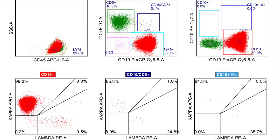This middle panel also shows us that the B-cells are CD5-negative. And on the right-hand side of the top row, you'll see that these CD19-positive B-cells do not co-express CD10. Importantly, looking at the lower row on the left-hand side, you can clearly see that the B-cells are almost exclusively surface kappa-restricted, indicating that this is a B-cell neoplasm that is not declaring what it might be, as it is CD5-negative and CD10-negative. This leaves a differential diagnosis of a small CD5-negative, CD10-negative B-cell neoplasm, something along the lines of perhaps a marginal zone lymphoma or a lymphoplasmacytic lymphoma.